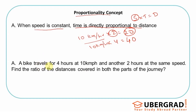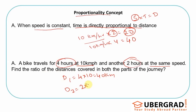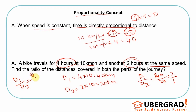For example: a bike travels for four hours at 10 kilometers per hour, and then another two hours at the same speed. Speed is constant in both parts of the journey. We need the ratio of distances covered in each part. Distance one is 4 × 10 = 40 kilometers; distance two is 2 × 10 = 20 kilometers. The ratio is 40 by 20, which is 4 to 2, or 2 to 1. So d1 by d2 equals time one by time two — four hours by two hours.